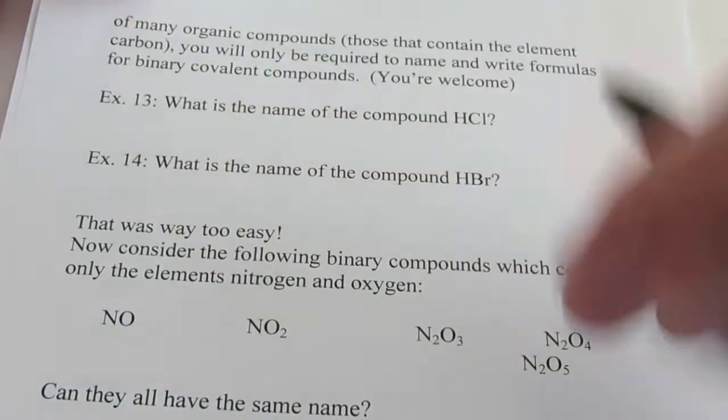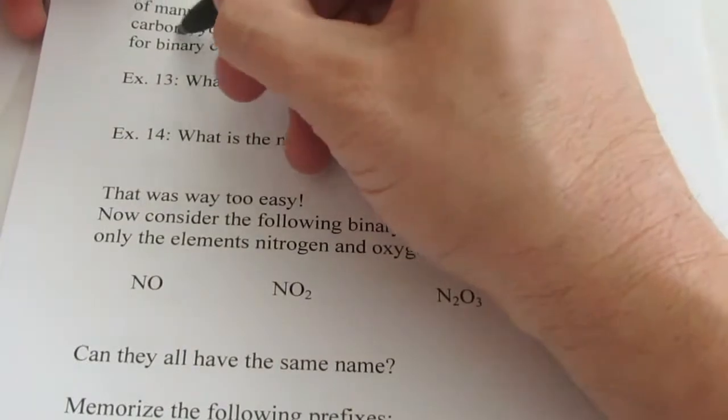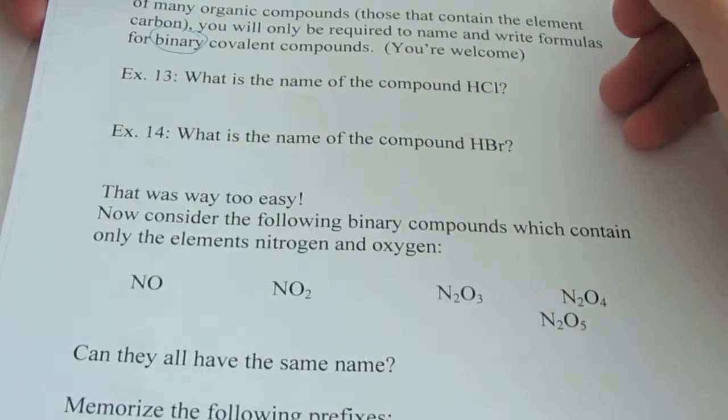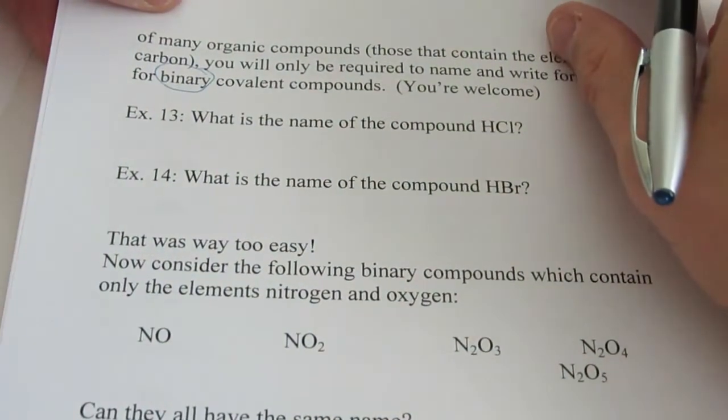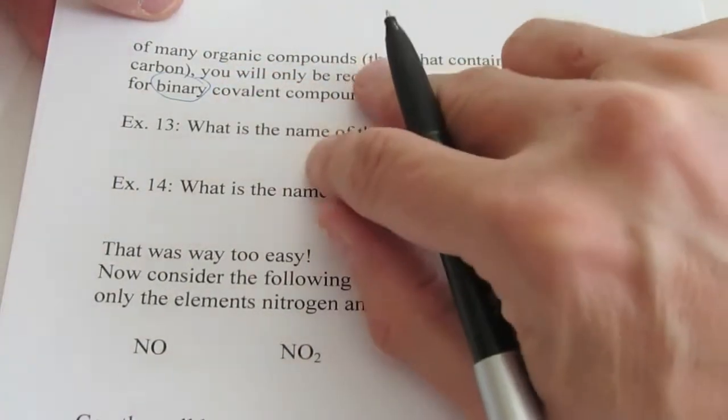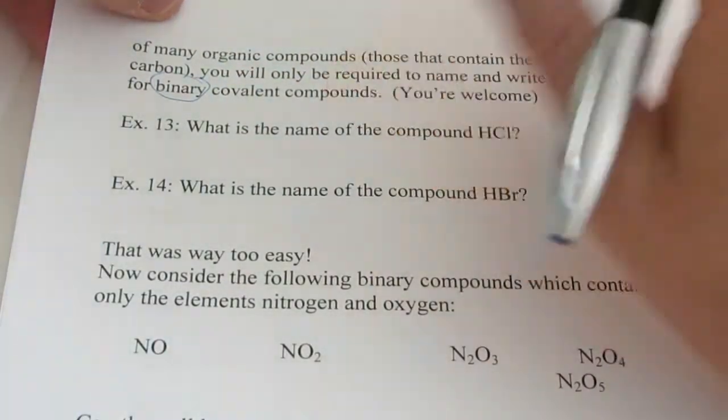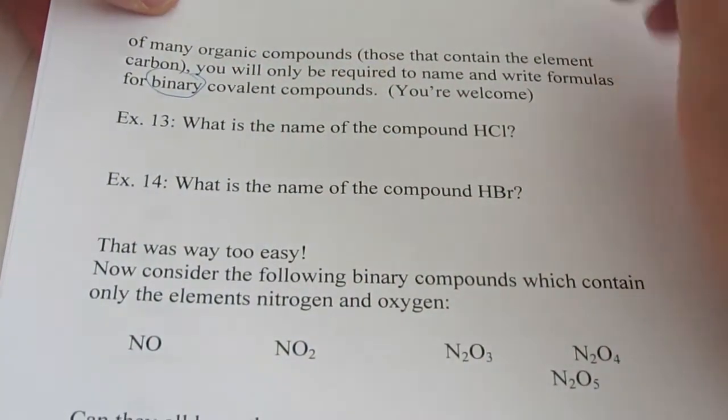Because of their complexity, I'm only going to make you learn how to name and write formulas for binary covalent compounds. So what does binary mean to you? Well, it means you're going to have two elements involved. Only two. So, this is how we do it.